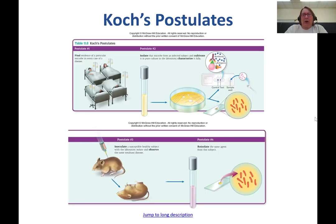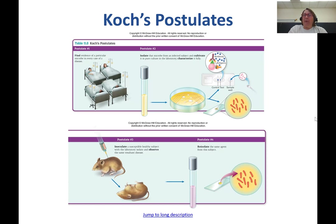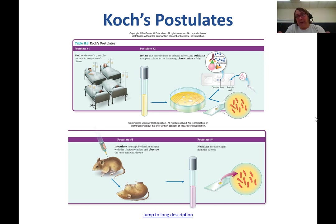Koch's postulates proceed in four steps: first, find evidence of a microbe — you have a candidate; second, isolate it and grow it; third, inoculate another organism such as a mouse; and fourth, re-isolate that same organism. If you can do all four steps, you have that organism identified as the causative agent. But if you can't culture it, you can't get past postulate two, and if the organism doesn't cause disease in a model organism, postulate three falls apart.